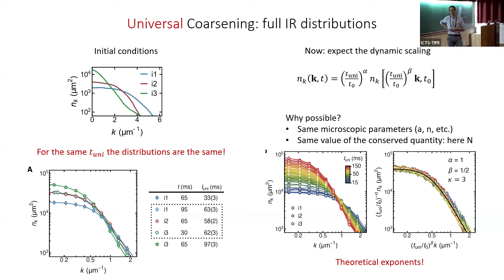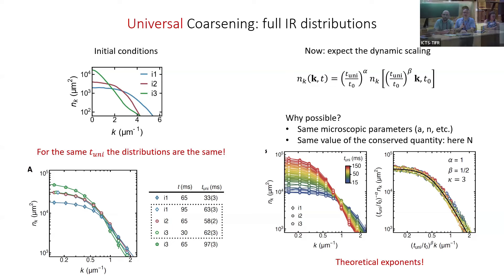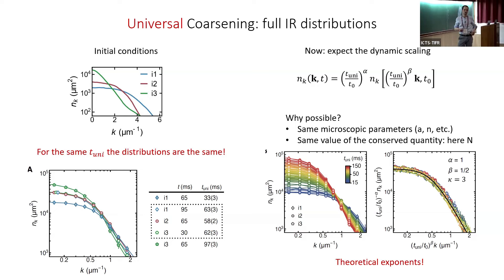Follow-up question: would the final momentum distribution be classical or on the quantum-mechanical exponential tail? We are definitely not on the exponential tail of quantum mechanics — the distributions are not similar to any exponential, with no Rayleigh-Jeans regime visible. The distribution still has some unusual shape.